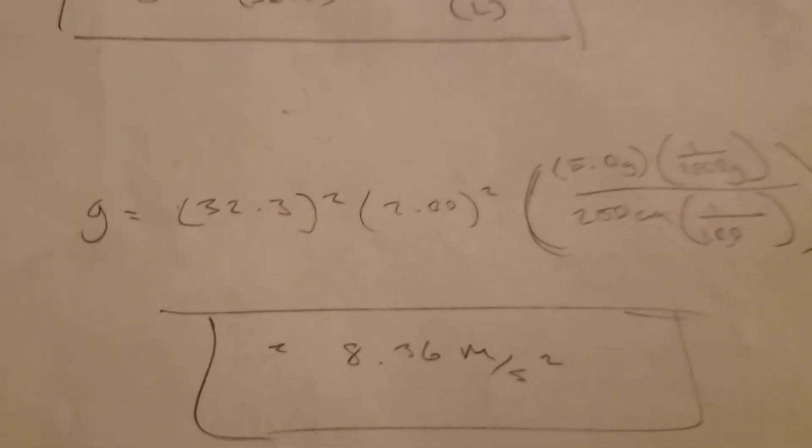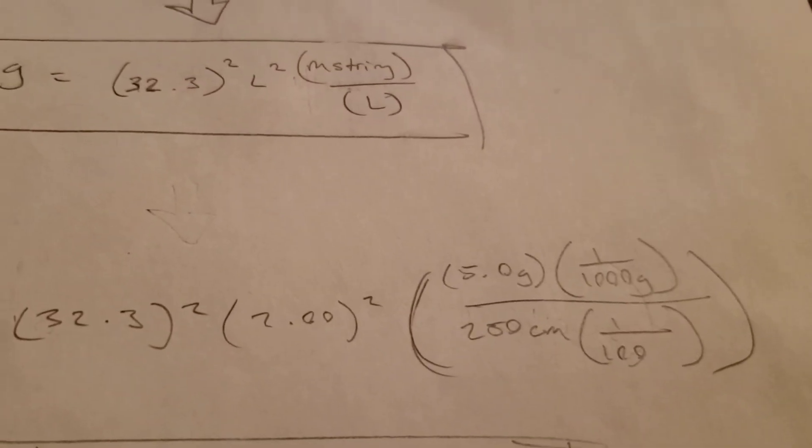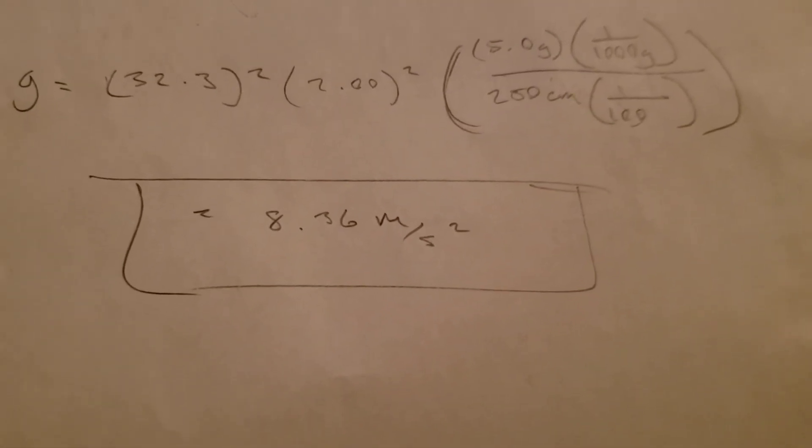So, yeah, all you have to do is plug in the values that the problem gives you now. You have to do some unit conversion over here for the mu value. And then, you should get about 8.36 meters per second squared.